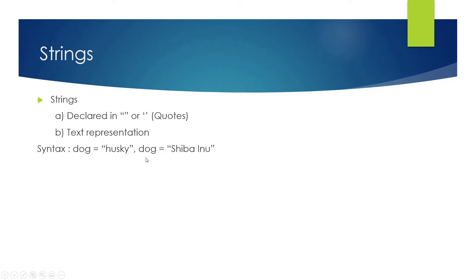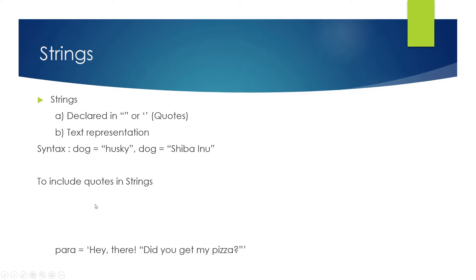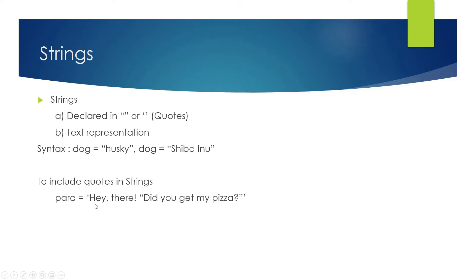So you can give 'dog' equal to 'husky' within double inverted commas, or 'dog' equal to 'shivanu' in double inverted commas. In case you give single inverted commas, it would work the same way as well — that's not a problem.